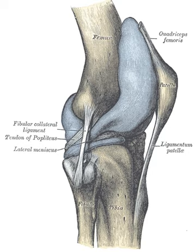The proximal tibiofibular articulation, also called the superior tibiofibular joint, is an arthrodial joint between the lateral condyle of the tibia and the head of the fibula. The contiguous surfaces of the bones present flat, oval facets covered with cartilage and connected together by an articular capsule and by anterior and posterior ligaments.